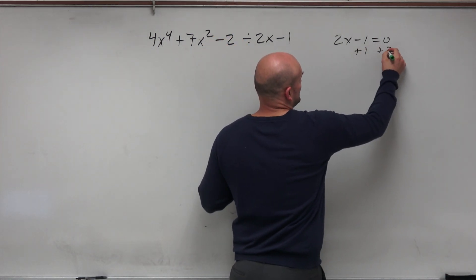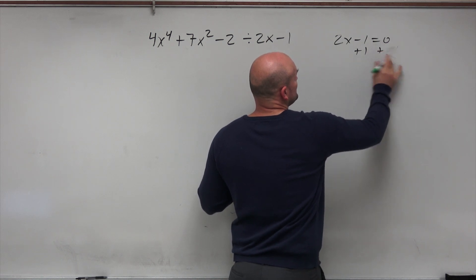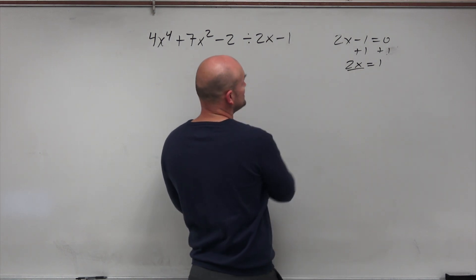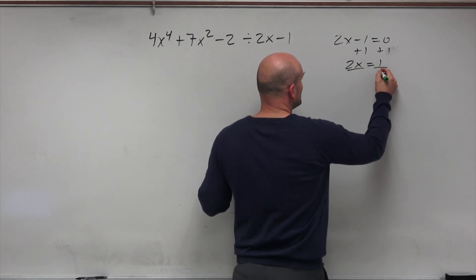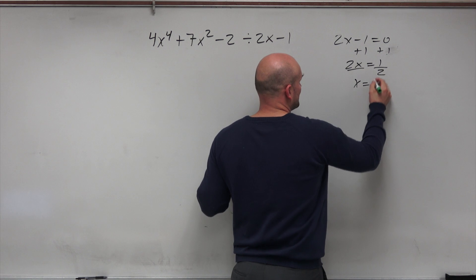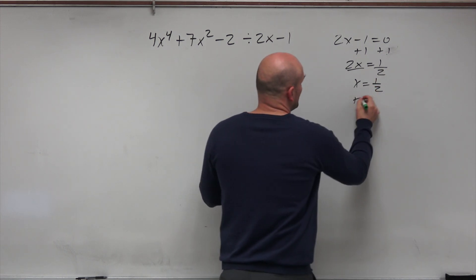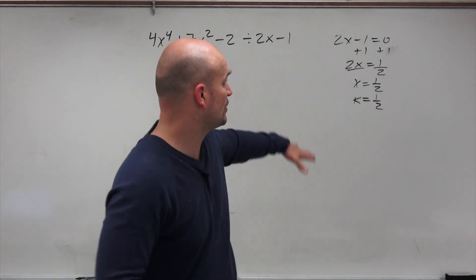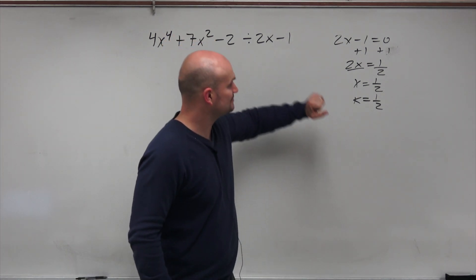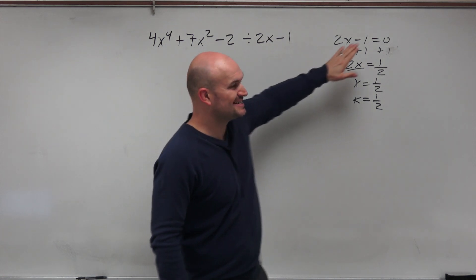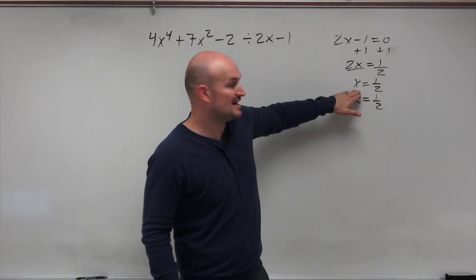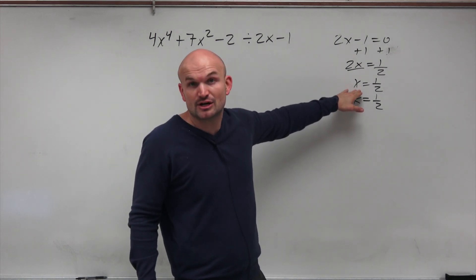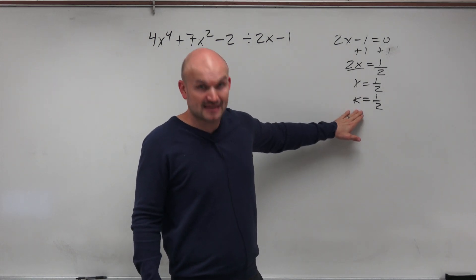The first thing you need to understand when you are using or setting up synthetic division is that we're not going to use our divisor 2x minus 1. What we're going to use is the value k. We don't really know if k is a zero. We don't know if 1 half is actually a zero of this polynomial. But what we can do is take your divisor, set it equal to 0, and when you solve for it, technically, if this was a factor, that would be called a zero. But right now, we don't know if it's a zero or not. So we're going to use the value k.